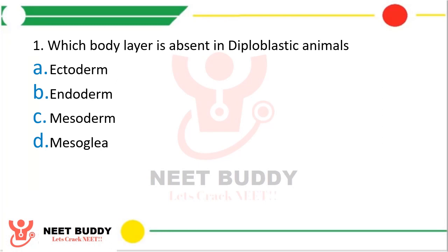Question number one: which body layer is absent in diploblastic animals? Option A, ectoderm; option B, endoderm; option C, mesoderm; or option D, mesoglia. You must be knowing body layers can be either diploblastic or triploblastic. Diploblastic — as the word itself is suggesting, diplo means 2 — so you have to tell which of these layers is absent in diploblastic.